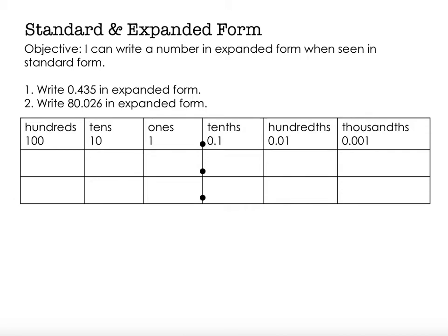We want that number to take up more space by showing each of the place values. So I'm going to go ahead and write that number in my place value chart. And by doing that, it makes it easier for me to identify the place values that I need to show when I write in expanded form.